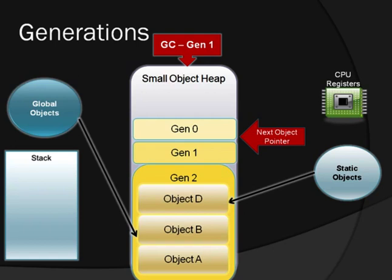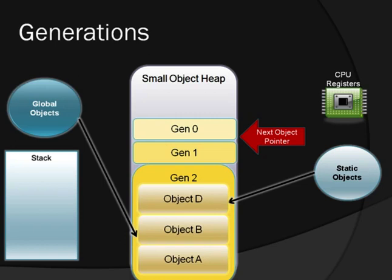So what will happen when a Gen 2 garbage collection takes place? Don't forget — each of these separate garbage collections for each of the generations is based on the size of the objects in each generation, and only when it reaches one of those thresholds will the collection run for that generation and the younger ones. So let's see a Gen 2 collection.